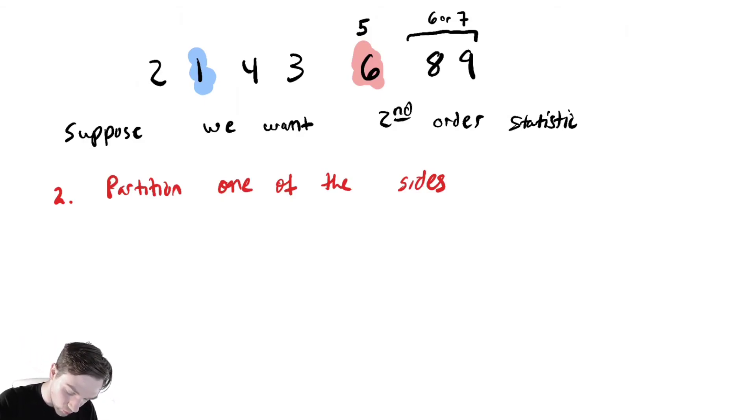If I look at element one and I partition around it, I would partition one and then two, four, and three are all greater than that.